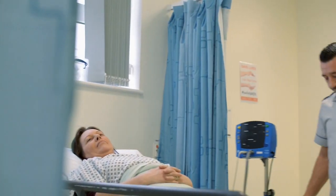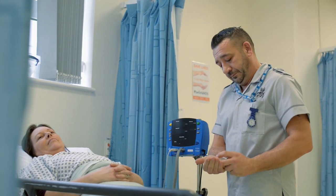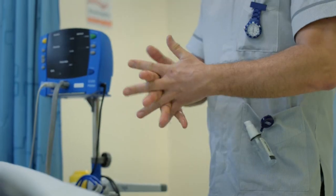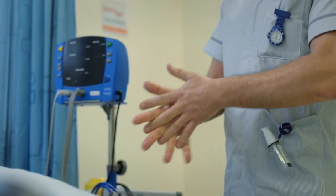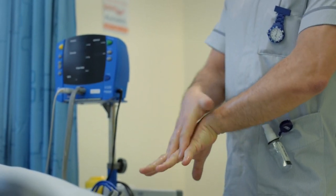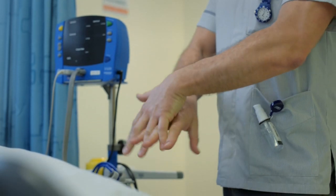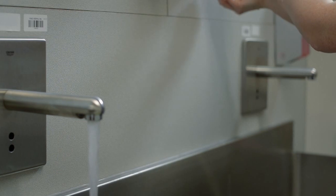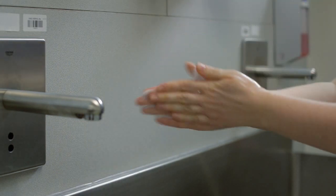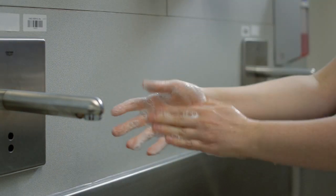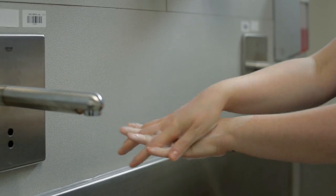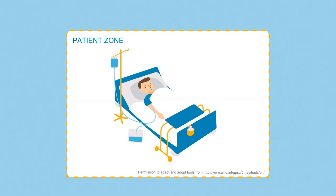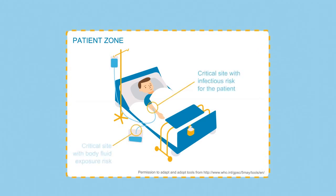You must perform hand hygiene to protect the patient against harmful germs carried on your hands or those present on their own skin. Hand rubbing with alcohol-based hand rub is the preferred method of hand hygiene if hands are not visibly soiled. Hand washing with soap and water is essential when hands are visibly soiled or dirty, or following exposure to any bodily fluid.